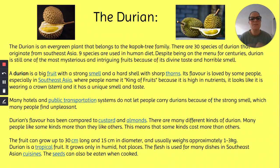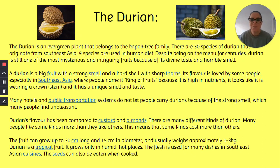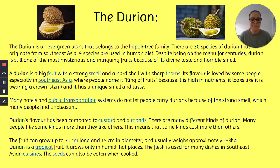A durian is a big fruit with a strong smell and a hard shell with sharp thorns. Its flavour is loved by some people, especially in Southeast Asia, where people name it King of Fruits because of its high nutrients. It looks like it's wearing a crown — the stem — and it has a unique smell and taste. Many hotels and public transportation systems do not let people carry durians because of the strong smell, which many people find unpleasant. Durian's flavour has been compared to custards or almonds. There are many different kinds of durians, and many different people like certain ones but don't like others, which means the cost can vary. The fruit can grow up to 30 centimetres long and 15 centimetres in diameter, and it usually weighs about 1 to 3 kilograms.